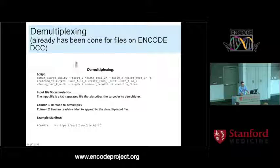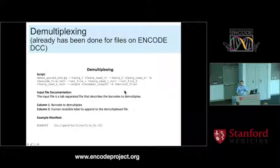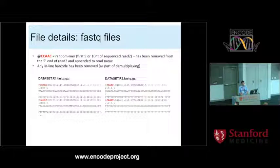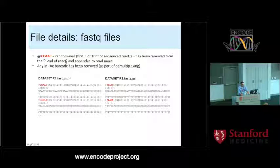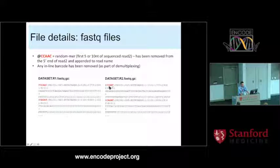We do demultiplexing - this has already been done to files on the ENCODE DCC, so you don't have to worry about that. There are inline barcodes used in some cases for high-throughput pooling; that's already been done on the datasets on the DCC. If you download the FASTQ files, they're standard FASTQ files with one exception: we take the randomer sequence and append it to the beginning of the read name, so we can keep it through all mapping and processing steps and then parse it back out at the end for PCR duplicate identification.